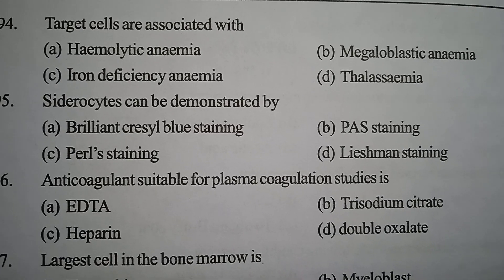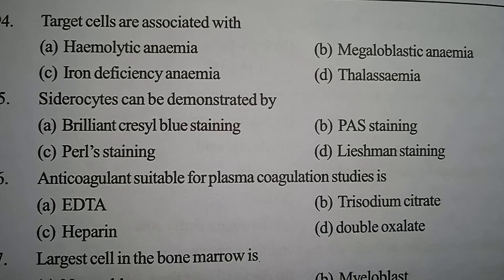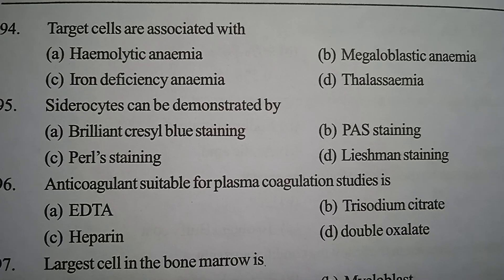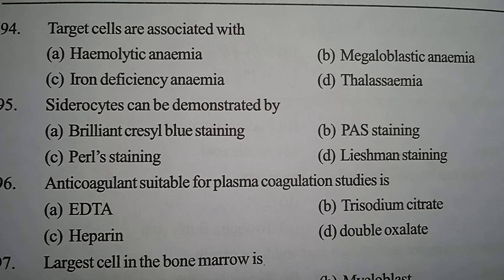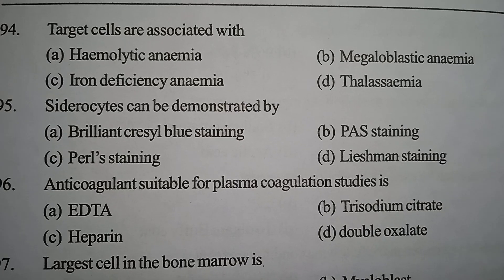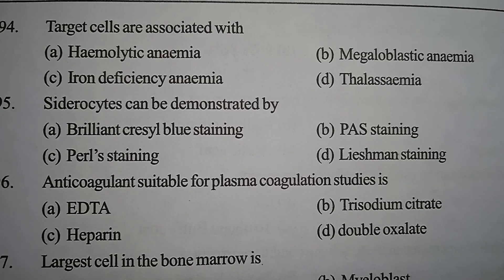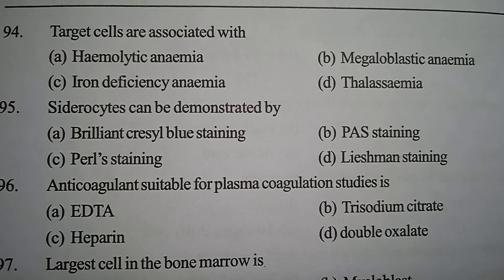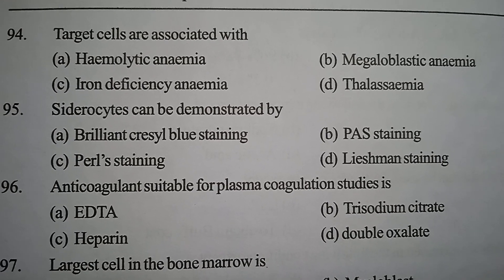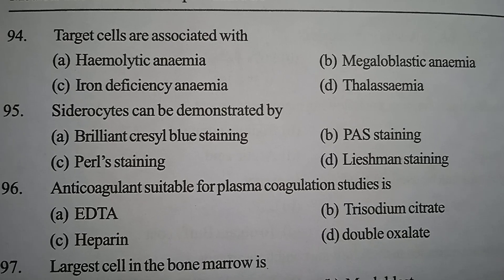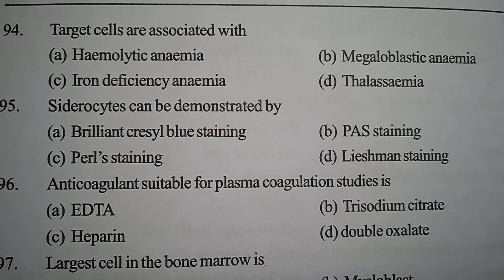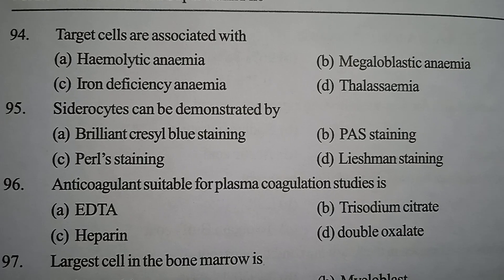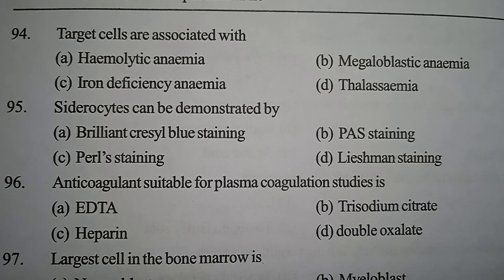Next one: the anticoagulant suitable for plasma coagulation studies is — Option A: EDTA. Option B: trisodium citrate. Option C: heparin. Option D: double oxalate. Correct answer: Option B, trisodium citrate, which is used in a ratio of 1:9.